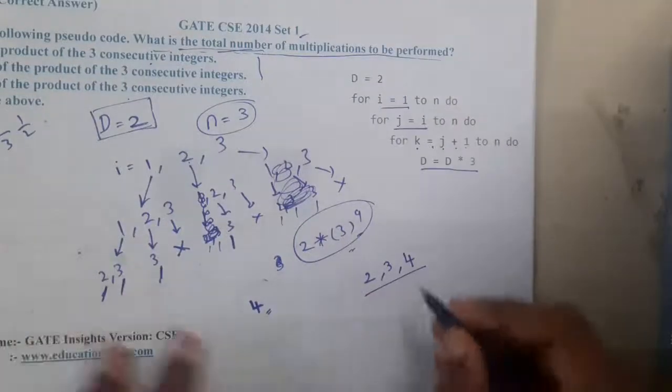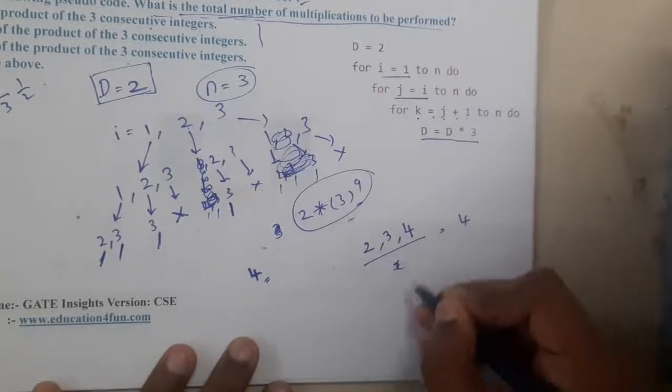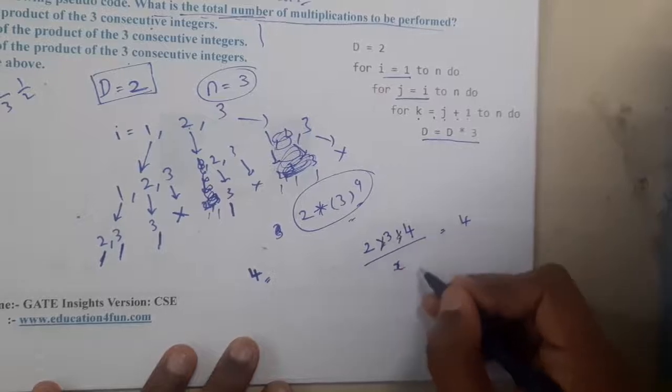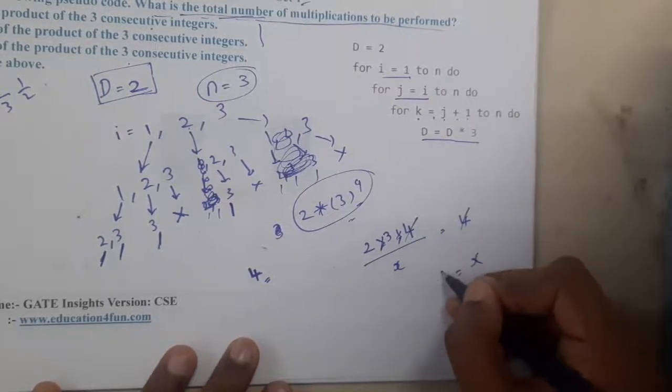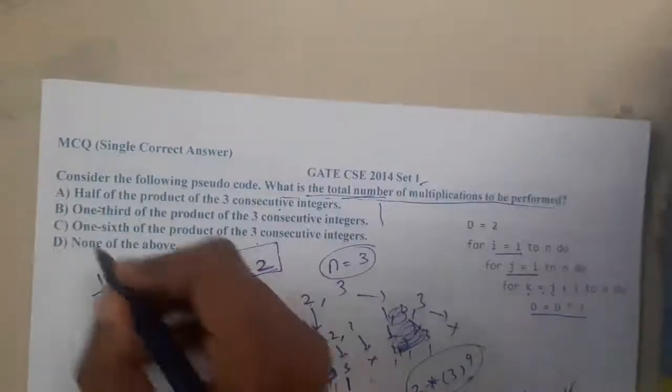Divided by something equals to 4. So what will be the result? You need to multiply them. That is nothing but 4, cancel and send x to this side. So it is nothing but x equals to 6. With this you can say that C is the correct answer.